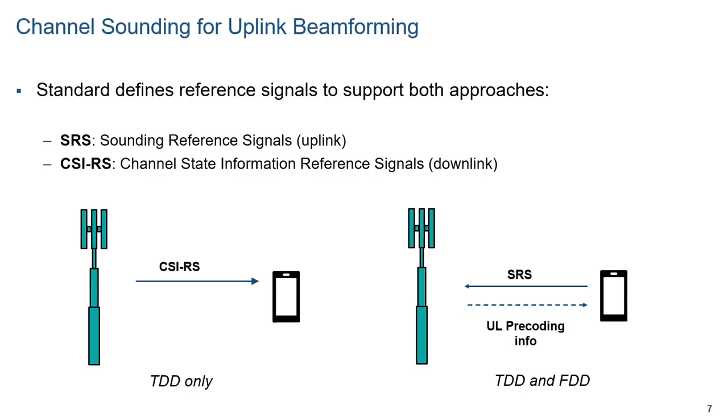Similarly on the uplink, the UE can estimate the downlink channel based on CSIRS and use that estimate to propose possible precoding for the uplink. This approach works only for TDD. Or the UE can receive precoding information directly from the base station. The base station can use the SRS to estimate the channel and determine suitable uplink precoding.